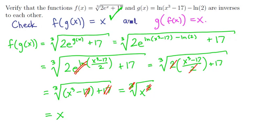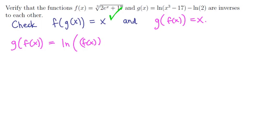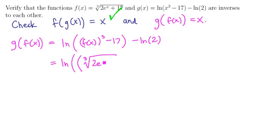Now we've got to focus on the second condition. Let's compute g of f of x. g of anything is ln of that thing cubed, so in this case the quantity f of x cubed minus 17, minus the natural logarithm of 2. So if we replace f by its formula, this is the natural logarithm of the cube root of 2e to the x plus 17, quantity cubed, take away 17, minus ln of 2.